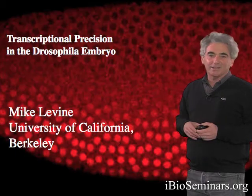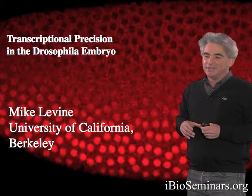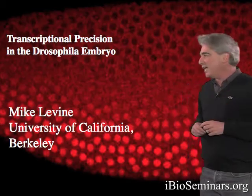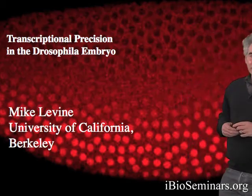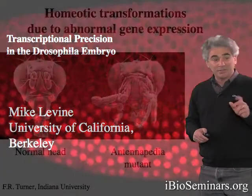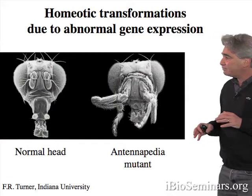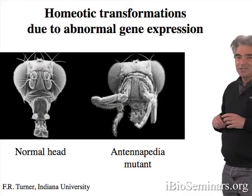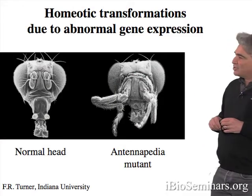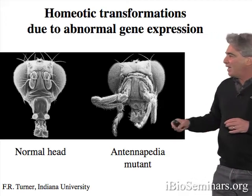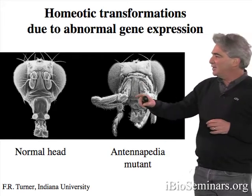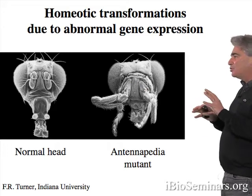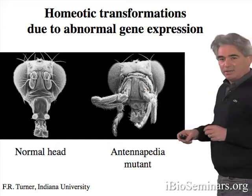It's long been recognized that the precise control of gene activity is very important in animal development. And a very striking example of this can be seen in the first slide. Here you're looking at the heads of adult fruit flies, Drosophila melanogaster. On the left is a fly that's normal. It has a pair of eyes, small antennae, and mouth parts.